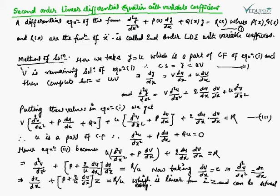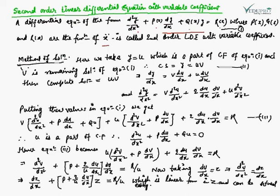The next topic is second order linear differential equation with variable coefficients. This is defined as: d²y/dx² + P(x)·dy/dx + Q(x)·y = R(x), where P is the coefficient of dy/dx, and Q and R are functions of x. This equation is called a second order linear differential equation with variable coefficients.